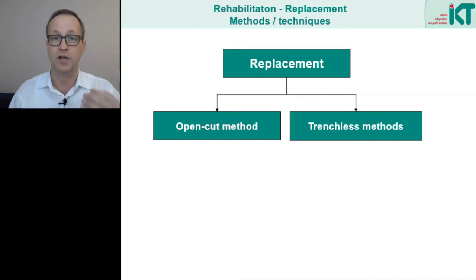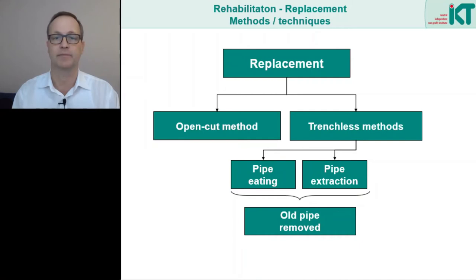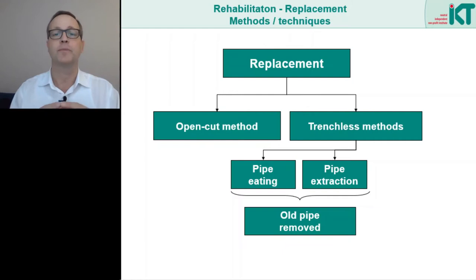The trenchless methods also include methods that we already know from new construction. For example the pipe eating method, which is similar to micro tunneling — the soil with the old pipe is removed at the working face and the new pipe is driven into this cavity. In the pipe extraction method the old pipe is pushed out by a thrust head and the new pipe is pulled in directly behind. In both cases, the old pipe is removed.